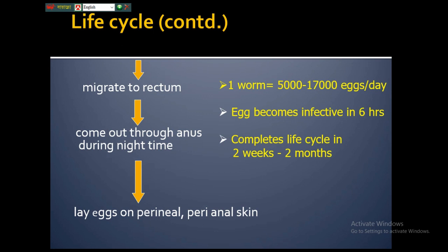After the female becomes gravid, she migrates from the colon to the rectum and exits through the anus during nighttime, laying thousands of eggs on the perianal skin. A single worm can lay 5,000 to 17,000 eggs per day. The eggs become infective within six hours on the perianal skin. The complete life cycle of Enterobius vermicularis takes about two weeks to two months.